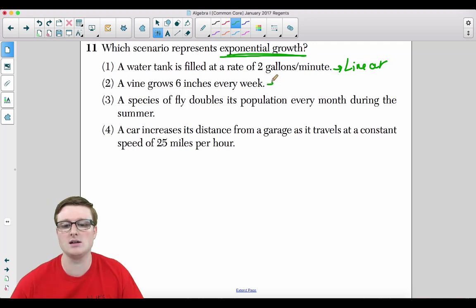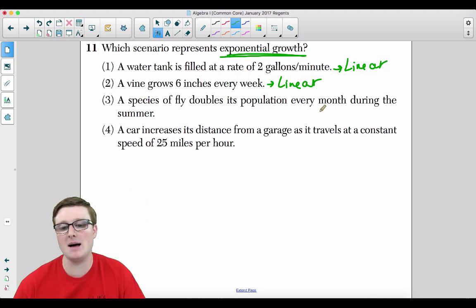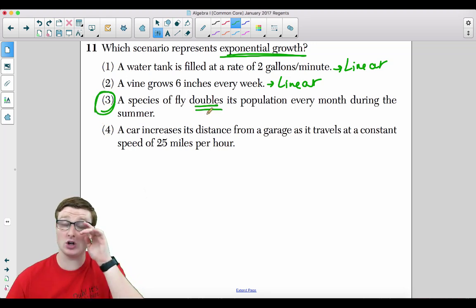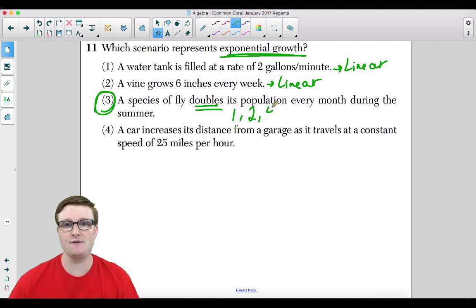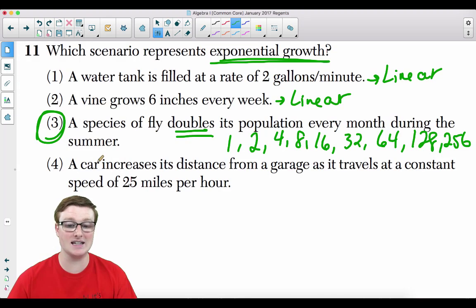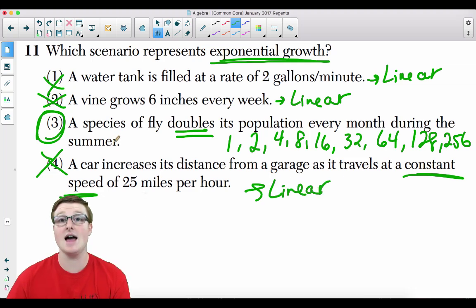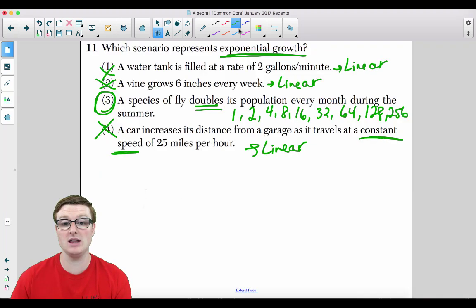A species of fly doubles in population every month during the summer. Yeah, that's your answer because it's doubling. That is the scale factor of two. Let's just say you have one fly. It doubles to two. Then it doubles to four. Then eight. Then 16. Then 32. Then 64. Then 128. Then 256. It skyrockets. It increases exponentially. Choice four, this is saying a car increases its distance from a garage as it travels at a constant speed. That's linear. So all of these are linear. Choice three clearly shows exponential growth. That's how you do question number 11.